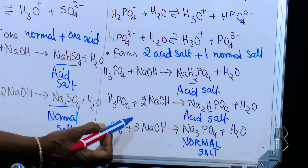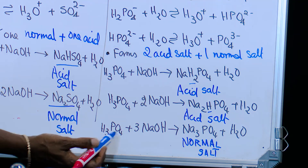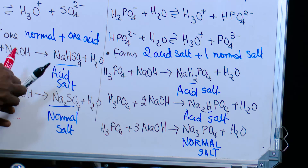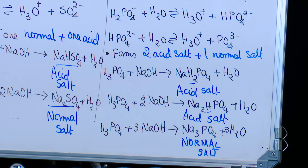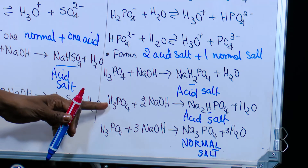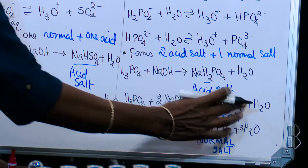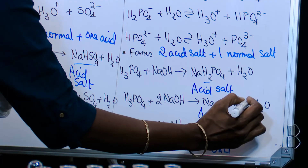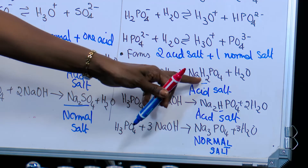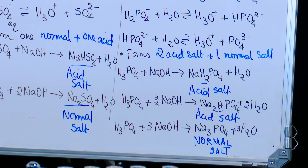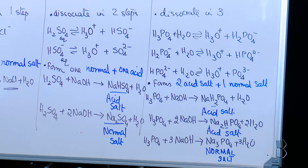Checking that the hydrogen atoms are balanced: there are three hydrogen atoms on each side, so three molecules of water are needed in the final equation. Balancing confirms the equations are correct. These are the differences based on basicity of the acid.